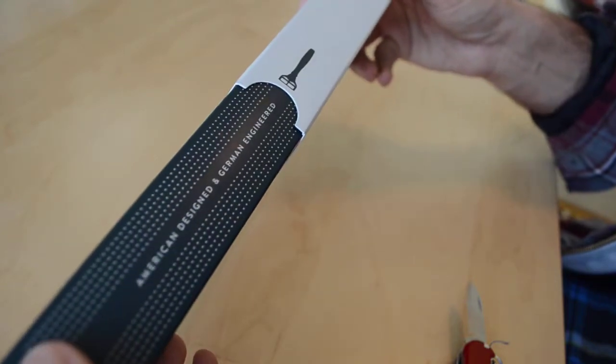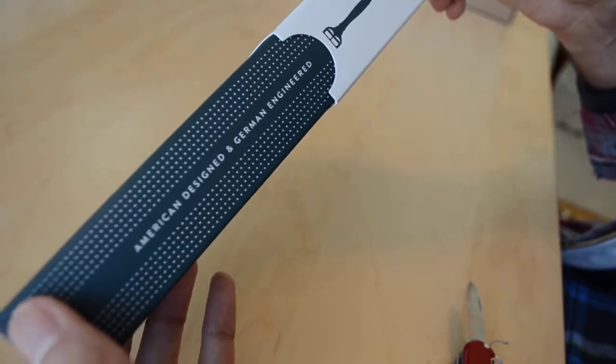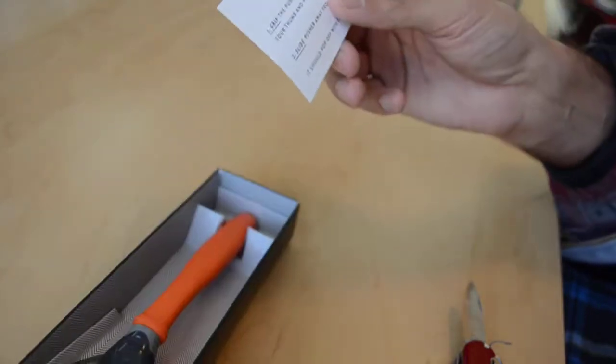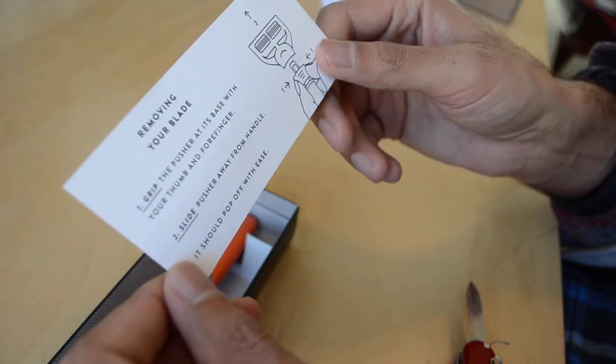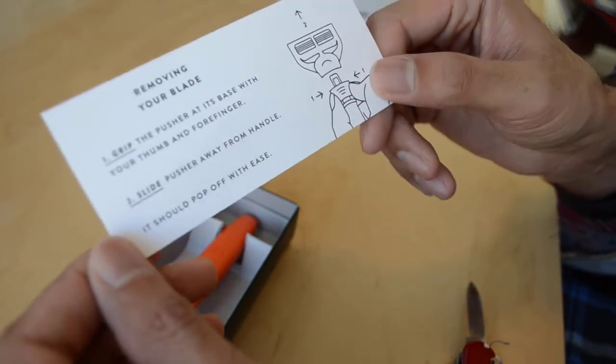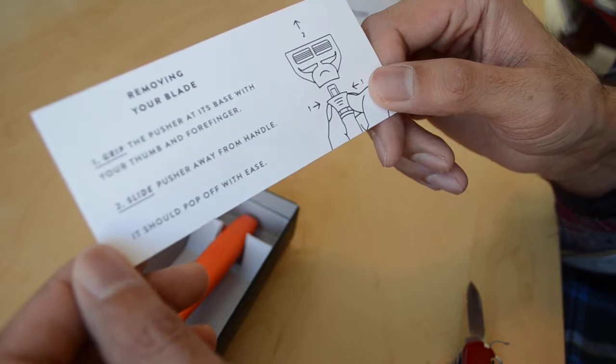Ooh American design and German engineered. There's a label. Grip the pusher at its base with your thumb and forefinger. Slide pusher away from handle. It should pop off with ease.